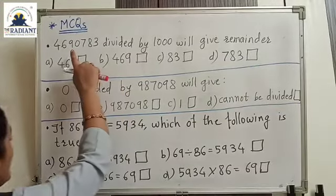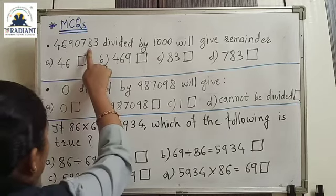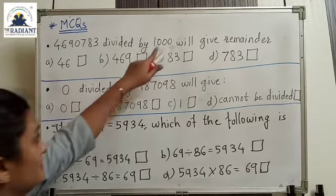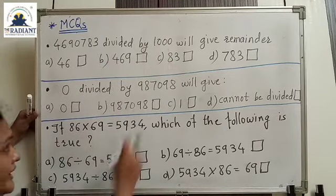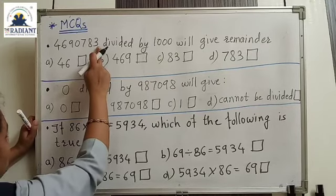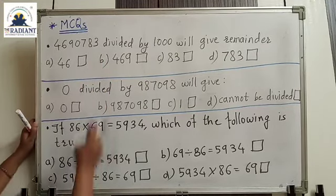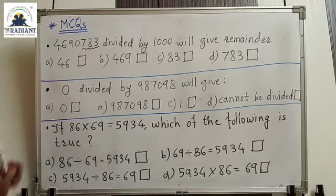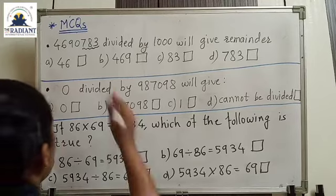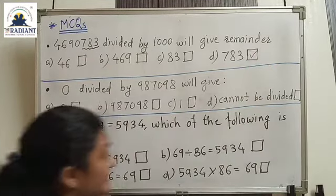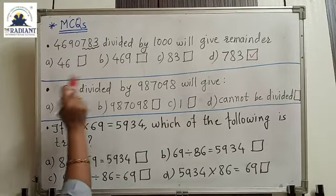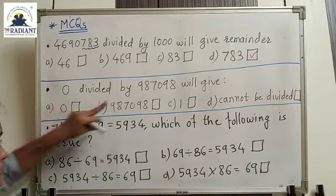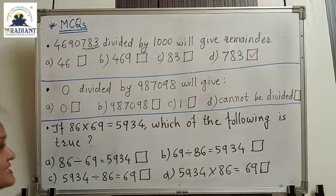Next MCQ: 46,90,783 divided by 1000 — what will the remainder be? When we divide by 1000, which has 3 zeros, we look at the last 3 digits — ones, tens, and hundreds — as the remainder. So the remainder is 783. Option D is the correct answer. Next: 0 divided by 9,87,098. Whenever we divide 0 by any number, the answer is 0.